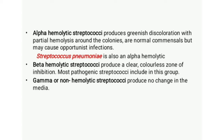Streptococcus pneumoniae is a human pathogen coming under alpha hemolytic streptococci. Beta hemolytic streptococci produce a sharply defined, clear, colorless zone of complete hemolysis on blood agar. Gamma or non-hemolytic streptococci produce no change in the media; this category includes fecal streptococci classified as Enterococcus species.